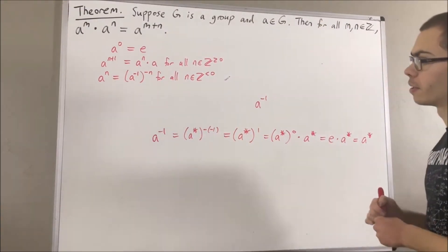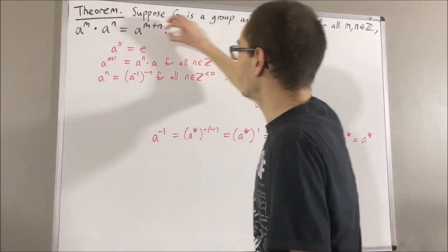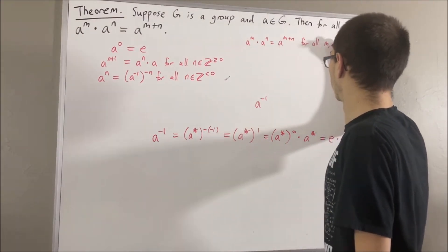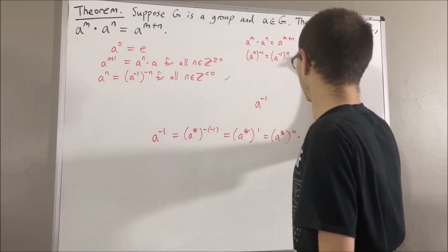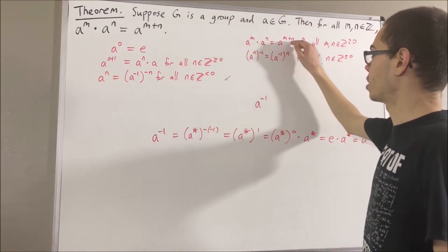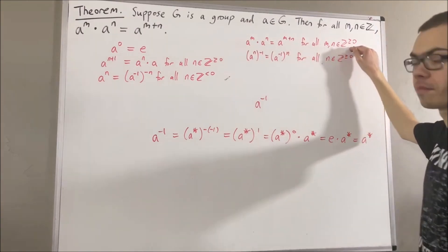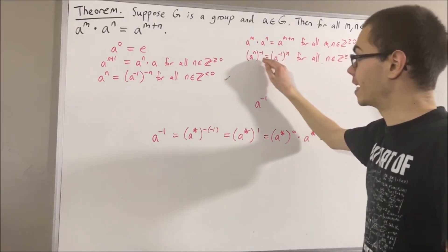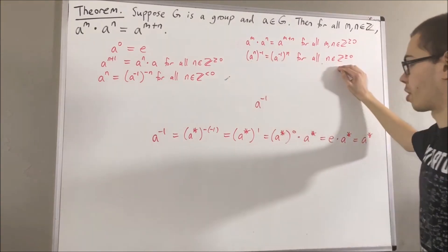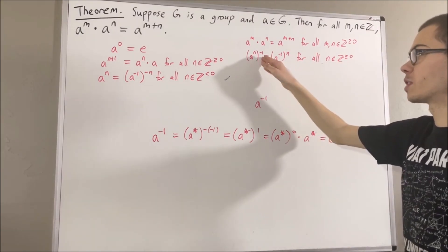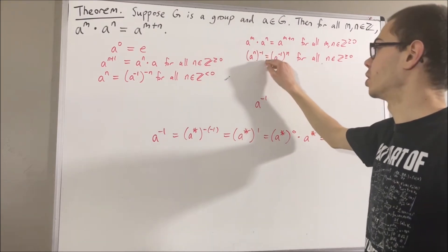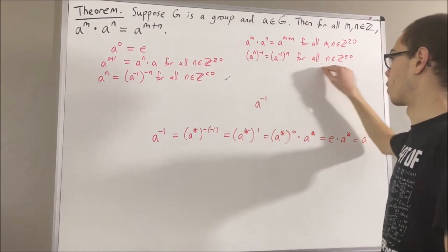In proving this theorem, we are going to be using two preliminary results. Given any group element A, we have shown that A to the M times A to the N is equal to A to the M plus N for all M and N greater than or equal to 0. And we've shown the inverse of A to the N is equal to the inverse of A raised to the power of N for all N greater than or equal to 0. In other words, we have shown that A to the power of N to the power of negative 1 is equal to A to the power of negative 1 to the power of N for all N greater than or equal to 0.